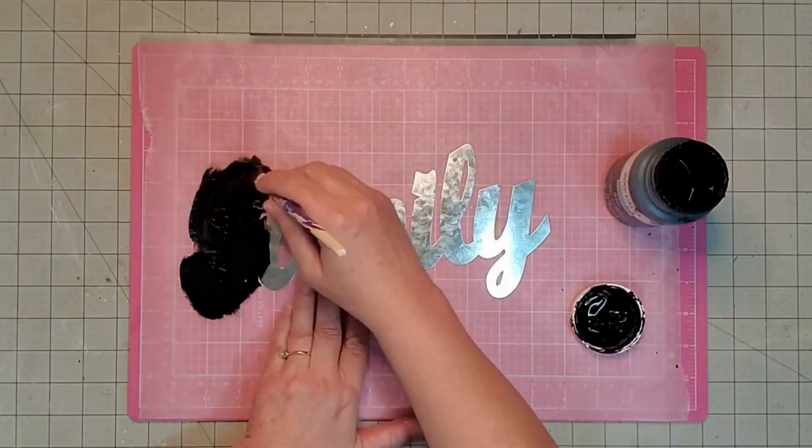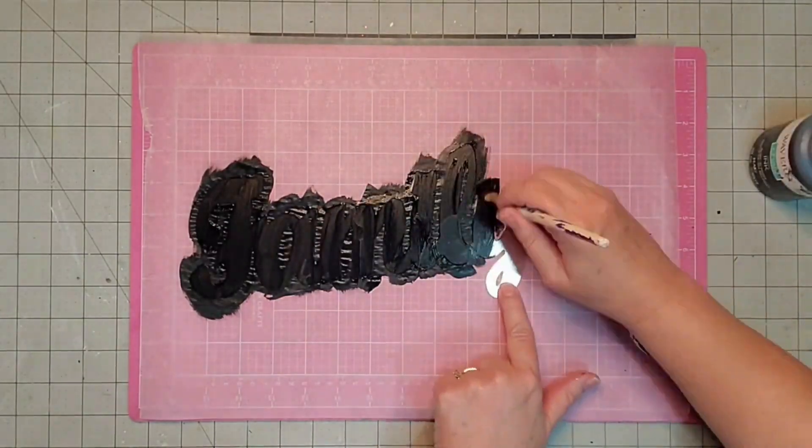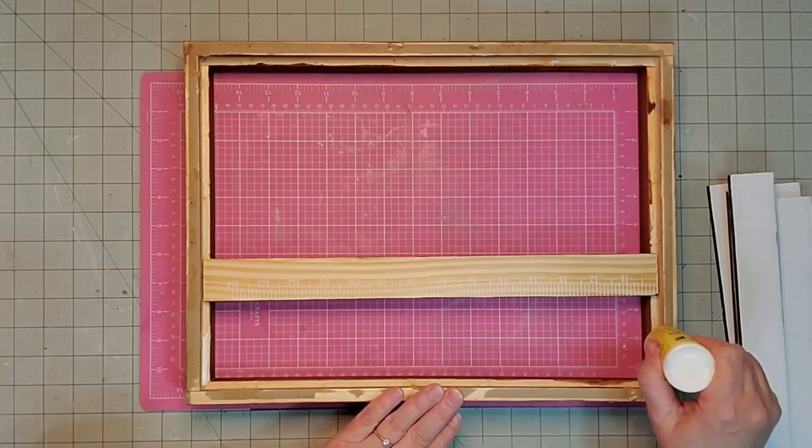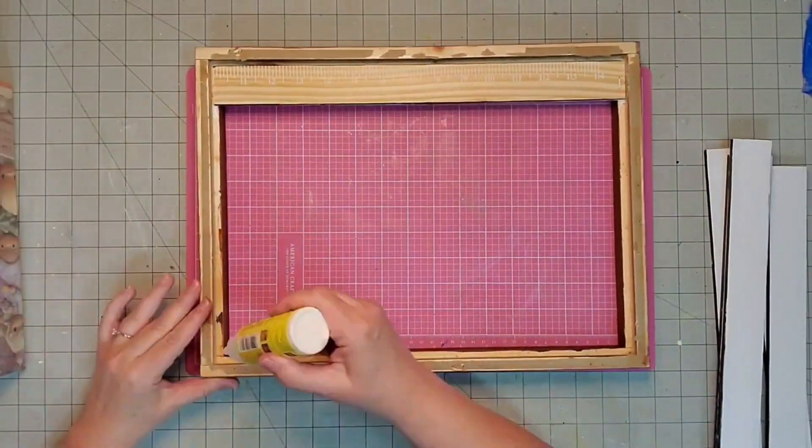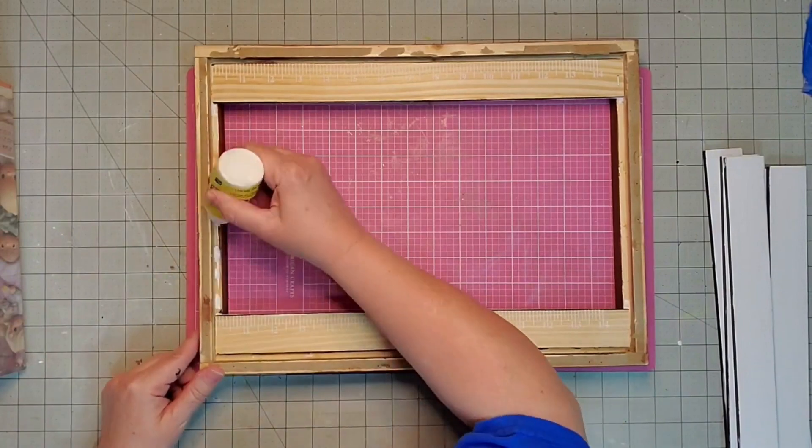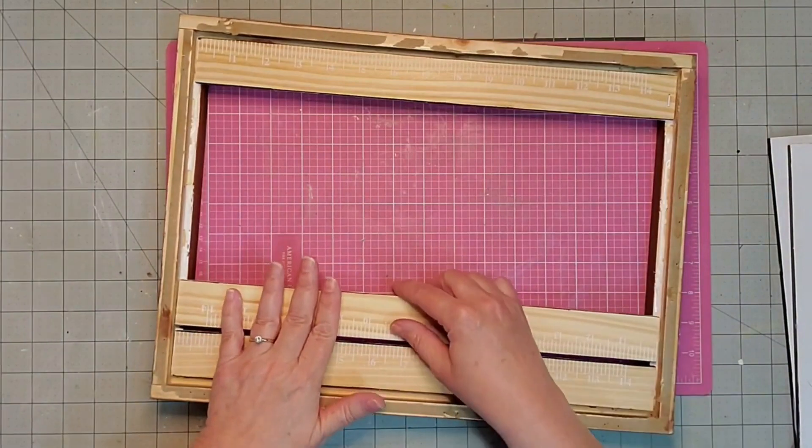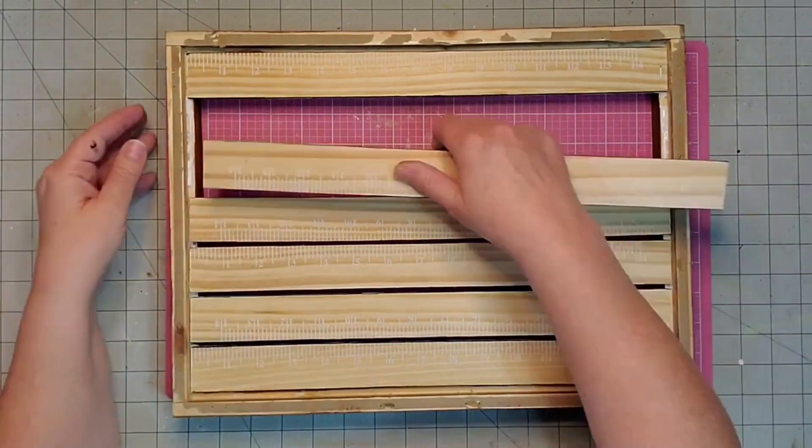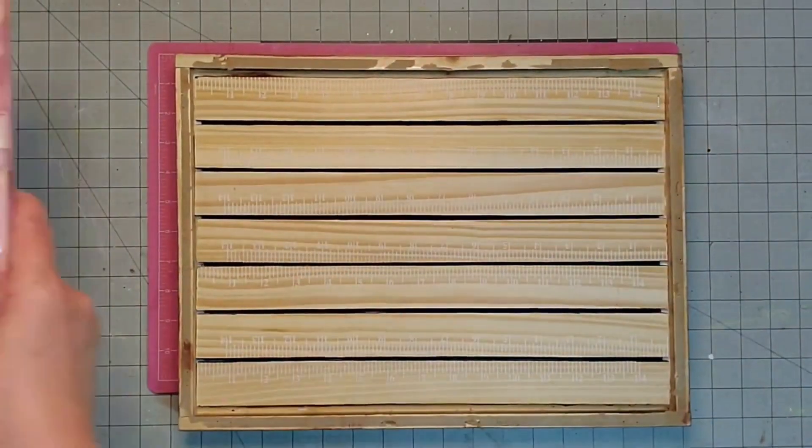I'm taking the word 'family,' this metal word, and I'm going to paint it in the black Waverly chalk paint. This took two coats to get really good coverage. Now I'm going to go in on the back part of my frame and evenly space apart these seven paint stirrers. Yes, there will be some gaps in between but we're going to take care of that. I'm going to place the glue on, get them like I want them all lined up, then put something heavy on top and let that set and dry.